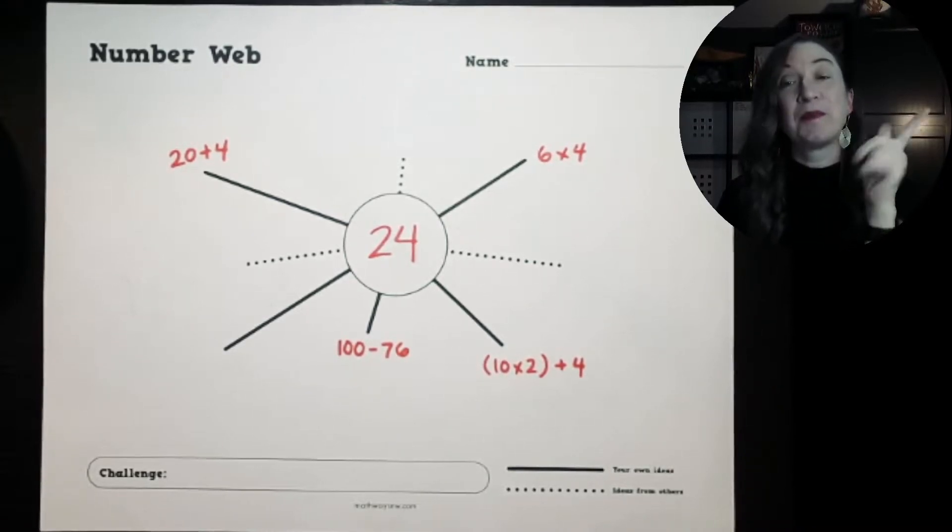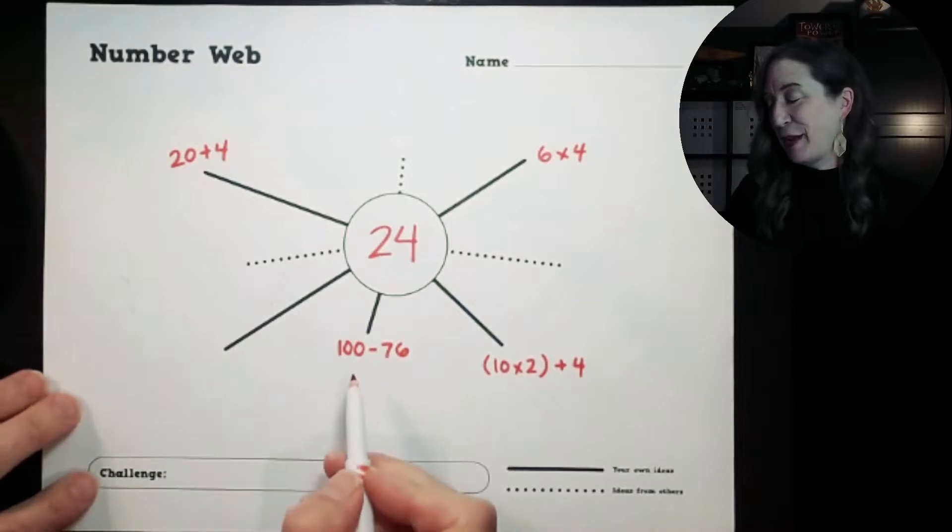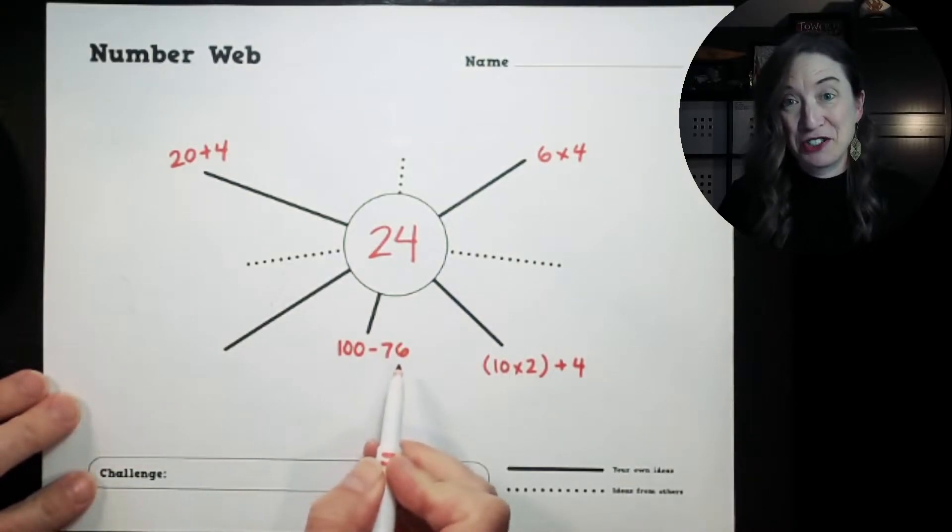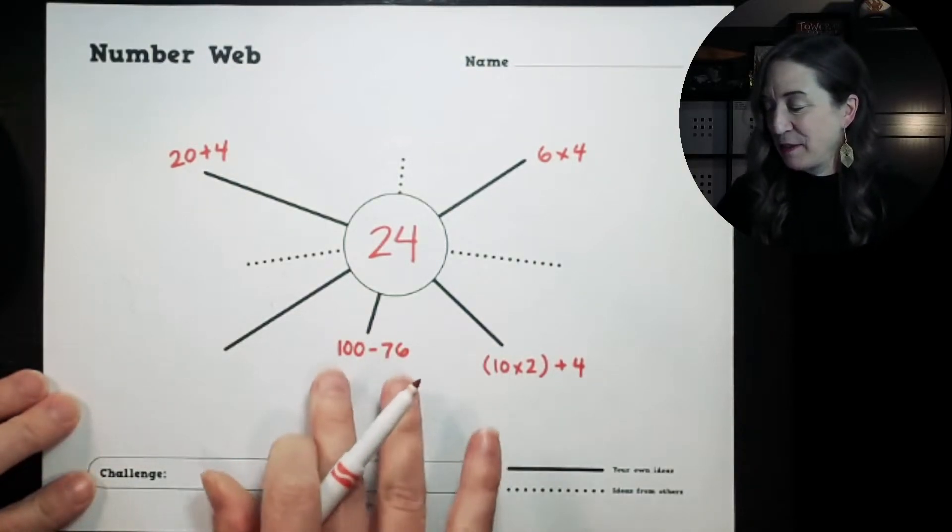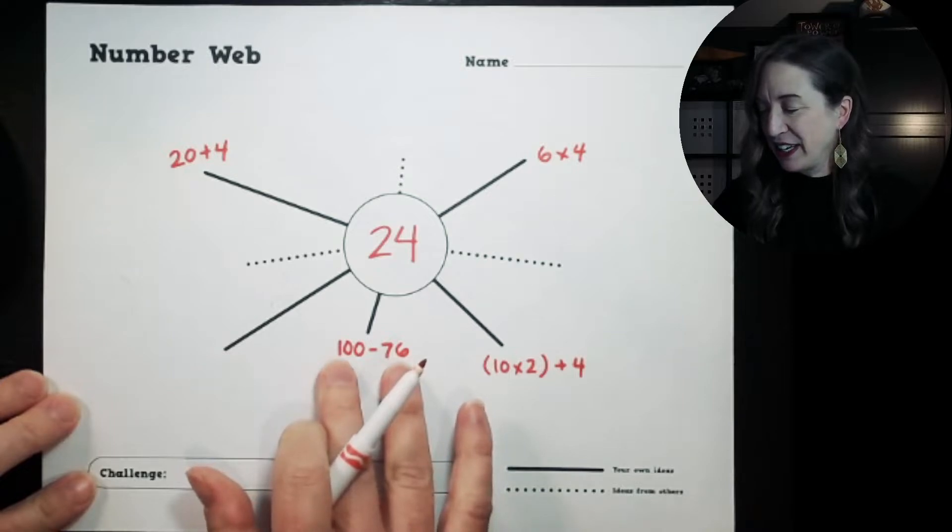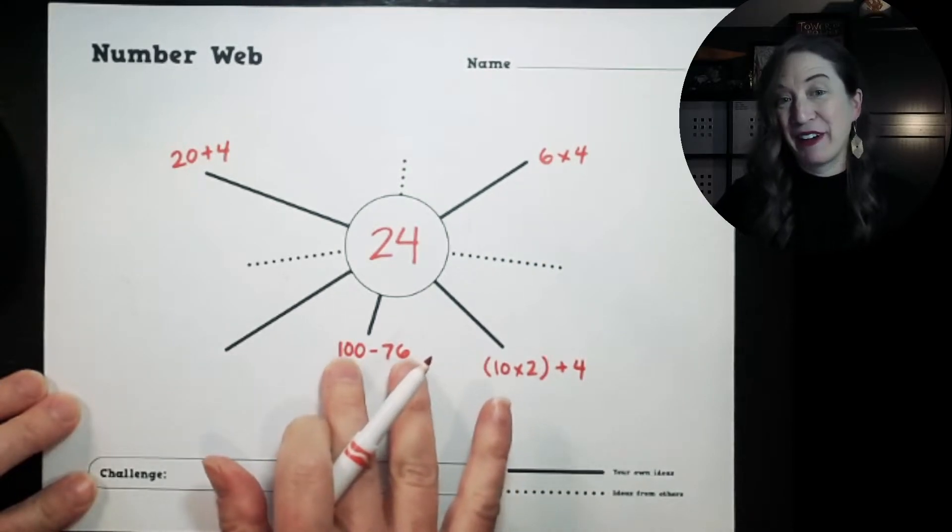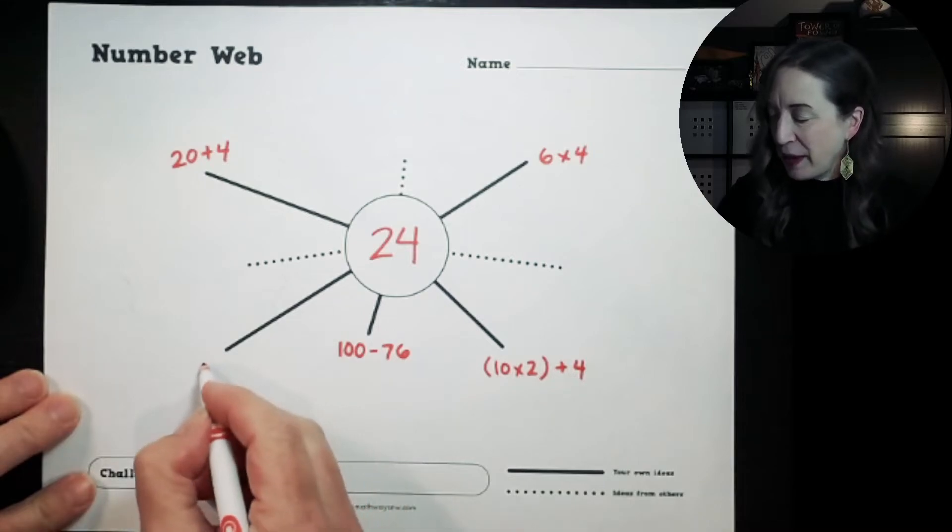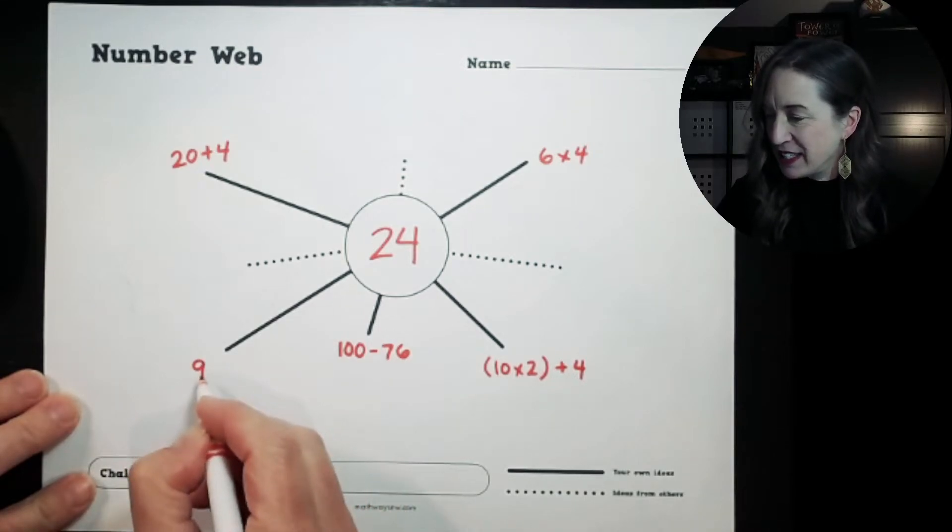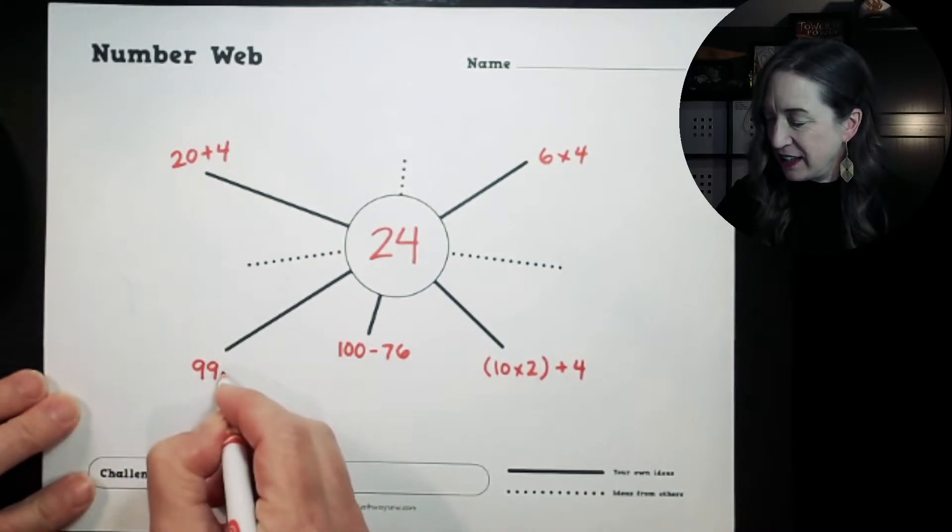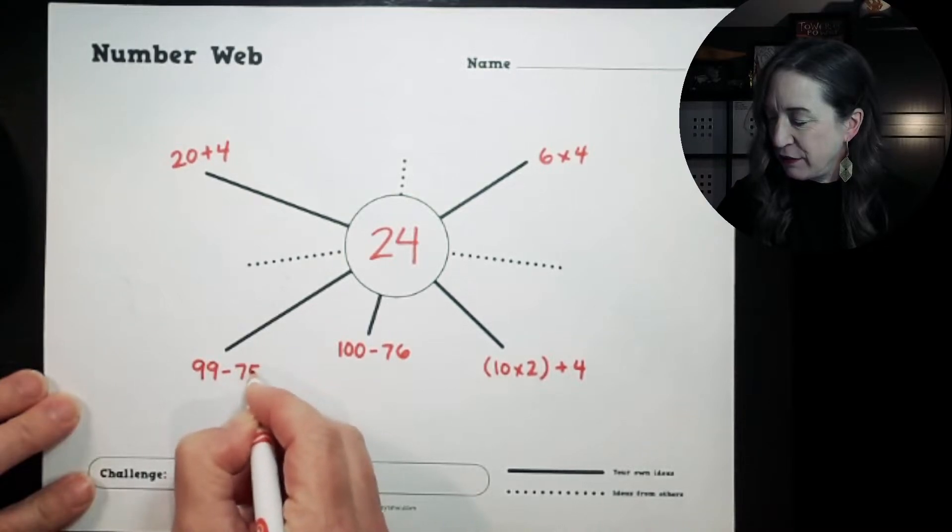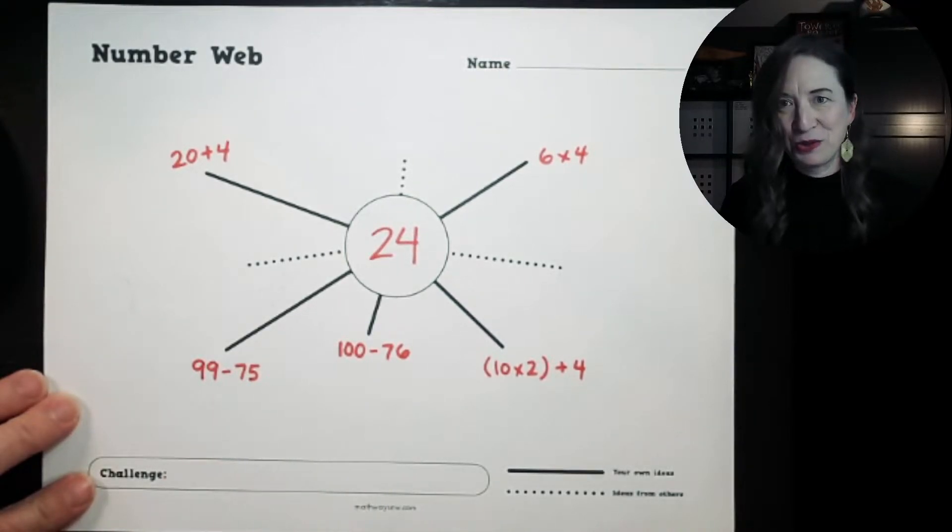I'm kind of running out of ideas. You know what I'm going to do? I'm going to use my knowledge of 100 minus 76 and I'm going to shift everything down the number line by 1. So if 100 minus 76 is 24, that must mean that 99 minus 75 is also 24.